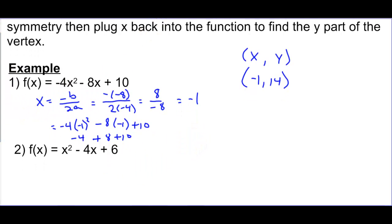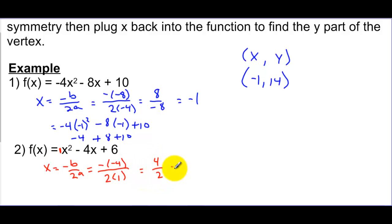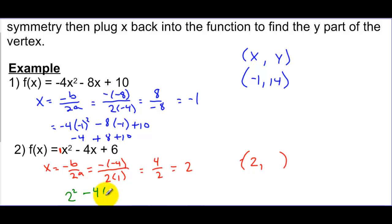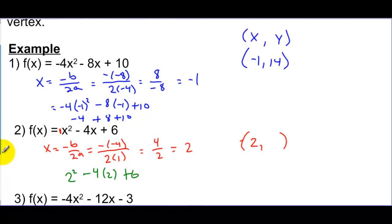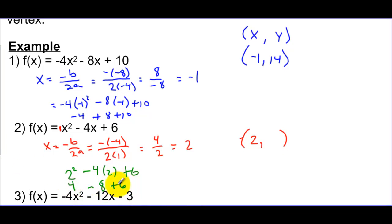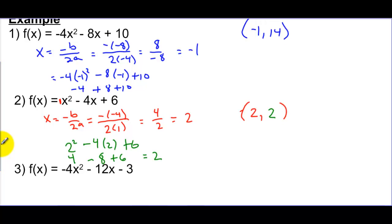Here's one more example. For the axis of symmetry, negative b over 2a: this is negative negative 4 over 2 times 1 — remember there's a 1 here — which gives 4 over 2, so x = 2. The vertex also has a 2 in the x-position. To find y, plug back in: 2² - 4(2) + 6 = 4 - 8 + 6. 4 minus 8 is negative 4, and negative 4 plus 6 equals 2. So the vertex is (2, 2). There's a third example you can try on your own.